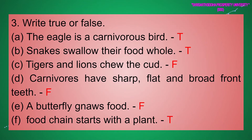Three: State true or false. (a) The eagle is a carnivorous bird — True. (b) Snakes swallow their food whole — True. (c) Tigers and lions chew the cud — False. (d) Carnivores have sharp, flat and broad front teeth — False. (e) Butterflies gnaw food — False. (f) A food chain starts with a plant — True.